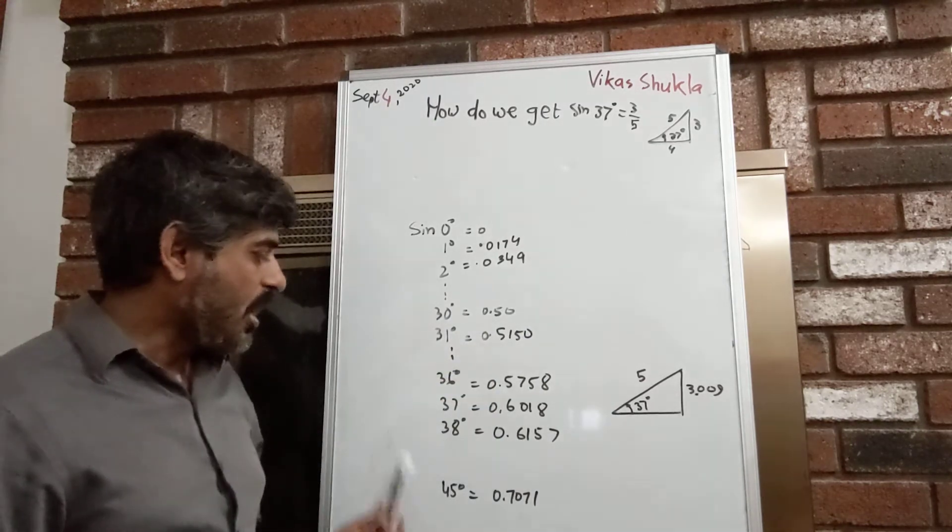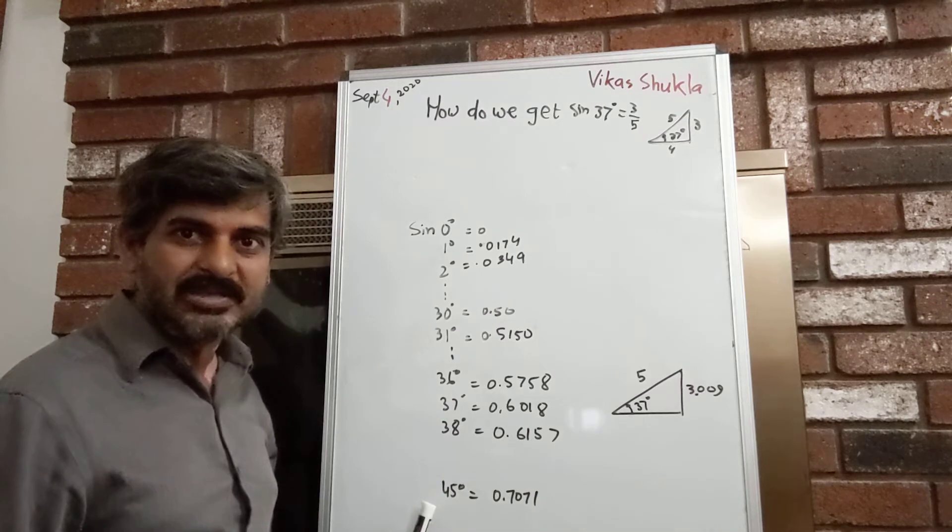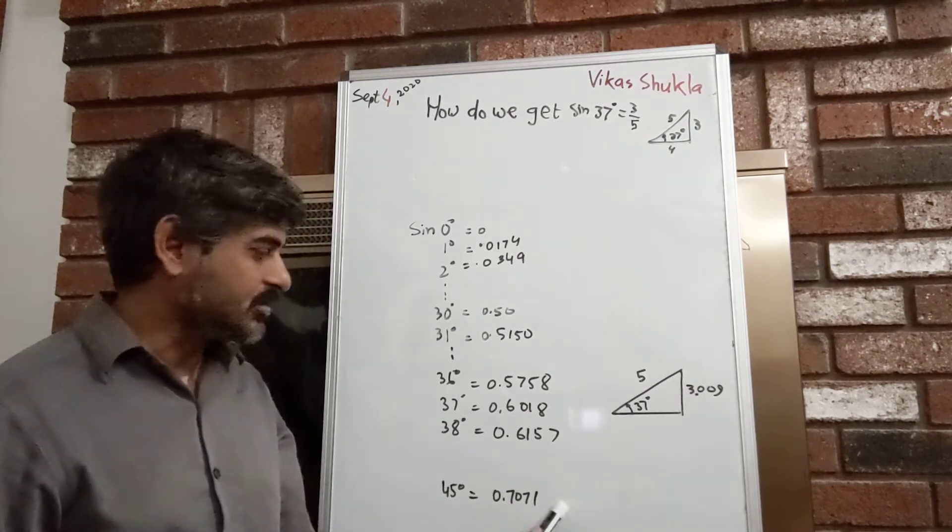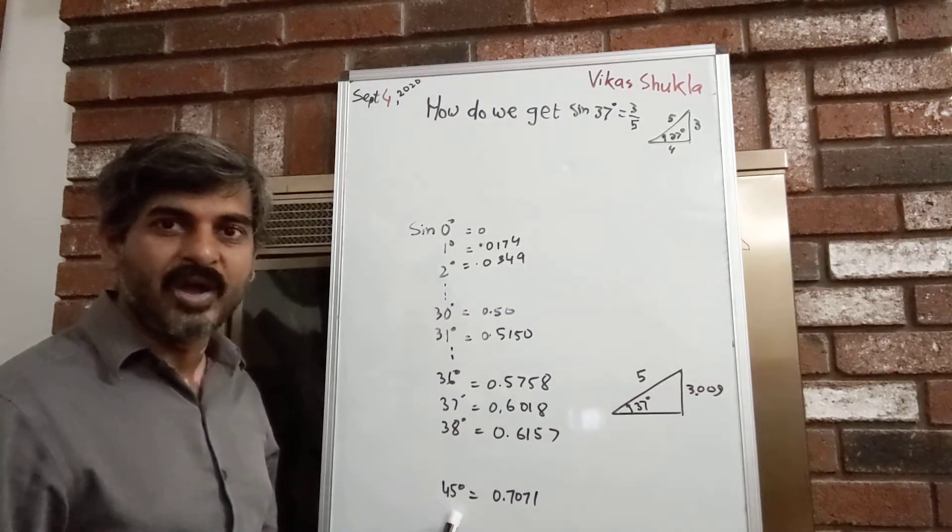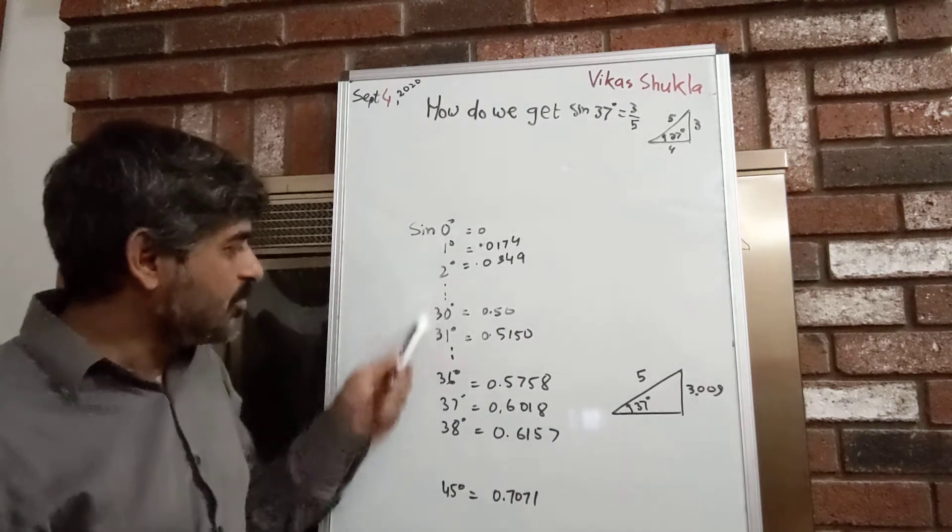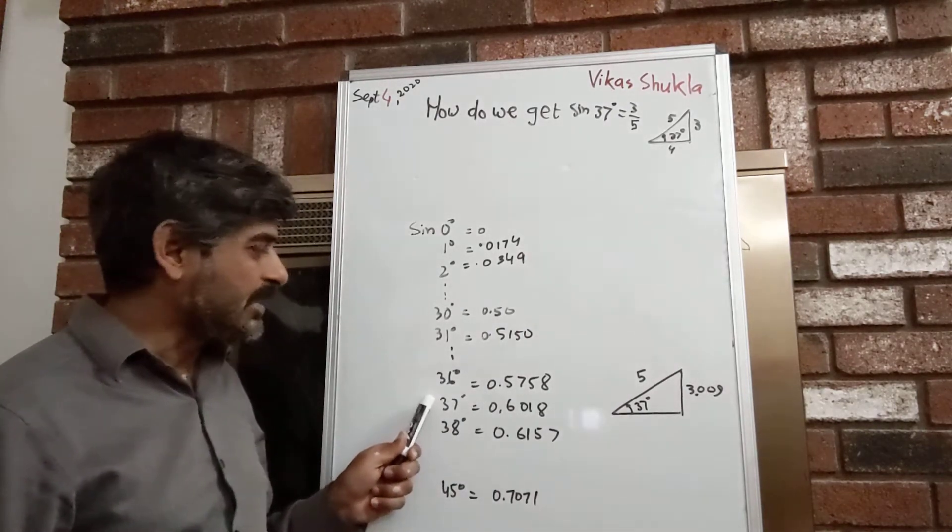We also know sine 45° has a very precise value—1/√2—which you can calculate to as many decimal places as you want. But if you keep going like that and stop at sine 37 degrees...